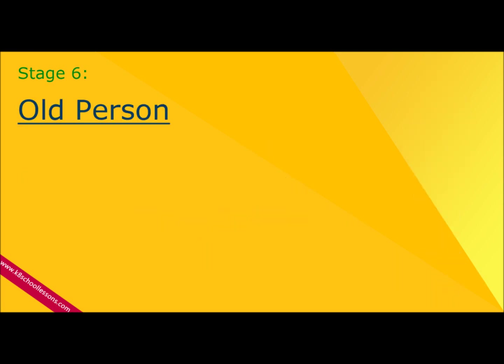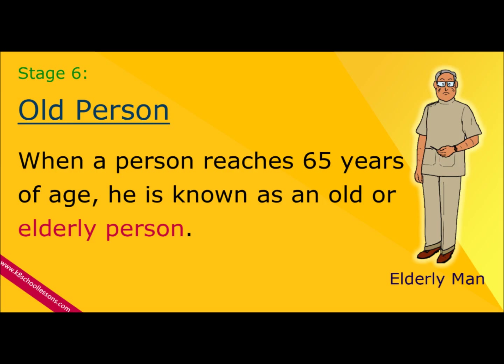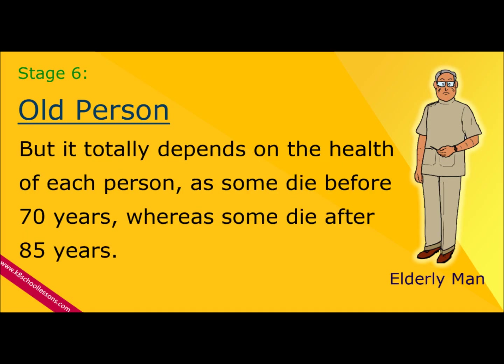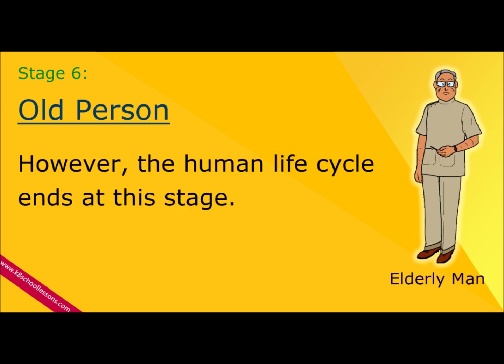Stage 6: Old person. When a person reaches 65 years of age, he is known as an old or elderly person. The average life expectancy of a person can vary from 70 to 85 years, but it totally depends on the health of each person, as some die before 70 years whereas some die after 85 years. However, the human life cycle ends at this stage.